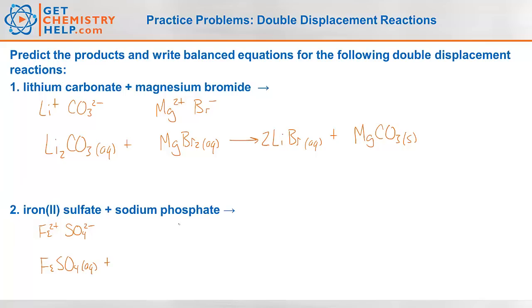How about sodium phosphate? Sodium is Na⁺ because sodium is in group 1. Phosphate is one of those polyatomics we know — PO₄³⁻. So sodium phosphate is Na₃PO₄. Sodium-containing compounds are generally soluble, so aqueous.